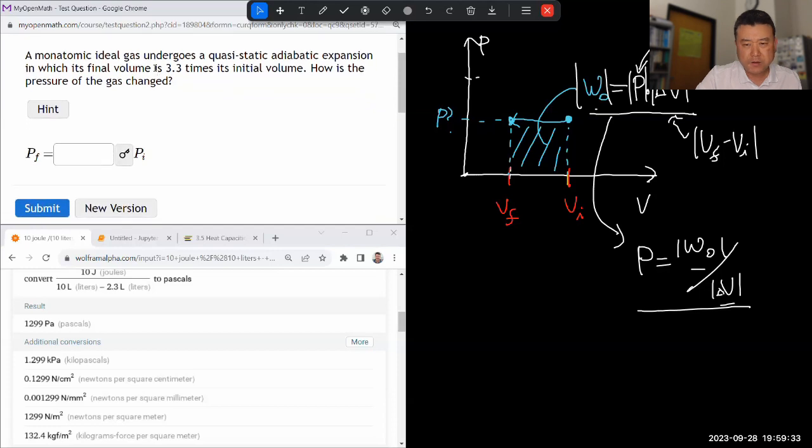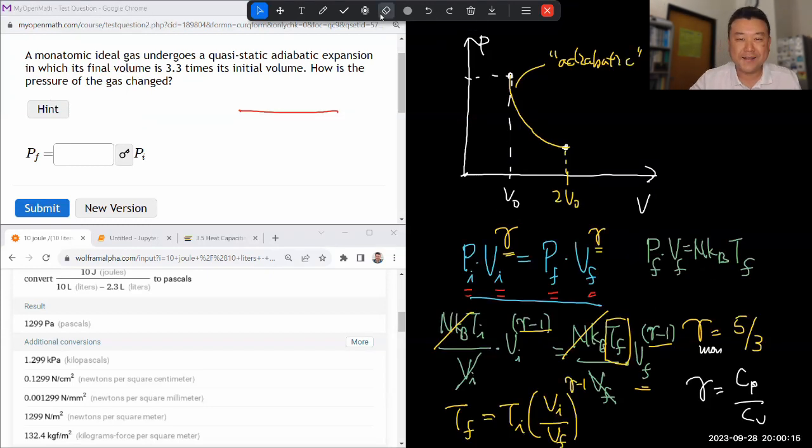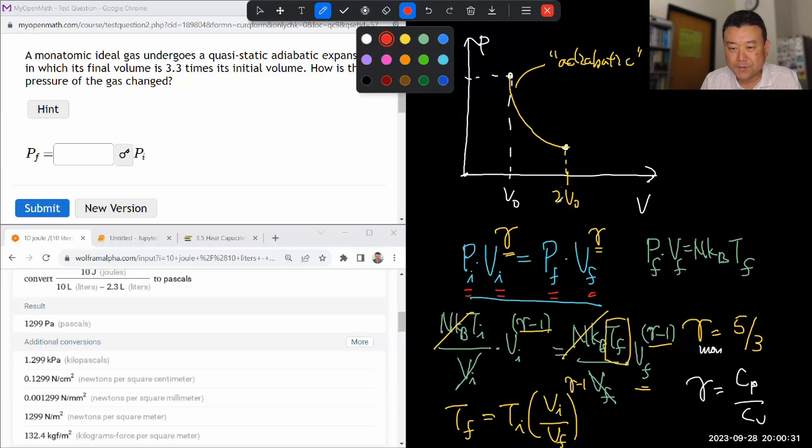So this question. So let me read it a little bit before I start erasing some of the previous work. Monatomic ideal gas undergoes quasi-static. I wish I still had the idea about the expansion thing. To image its final volume is. If I do undo, how much can I undo? So let me start from here. And then just to make changes from here. So quasi-static, adiabatic expansion, what we had before, in which the final volume is 3.3 times instead of what we had before. So we'll say, my final volume is 3.3 V-naught.